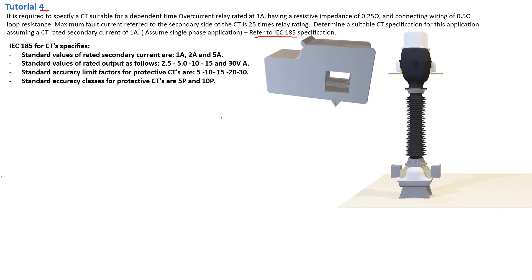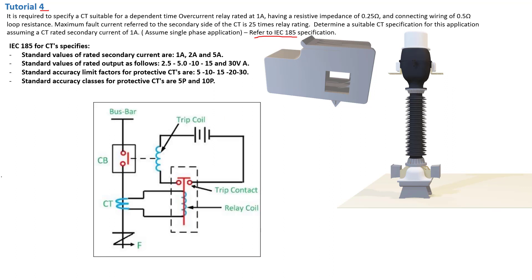What happens when the current transformer reaches saturation? It becomes useless. If it reaches saturation, it will never tell you how much current is flowing — it could be 100,000 amps and it will never have a proportional current at its secondary. That's why it becomes useless. And hopefully, before it reaches saturation, your circuit breakers have already tripped and isolated the fault.